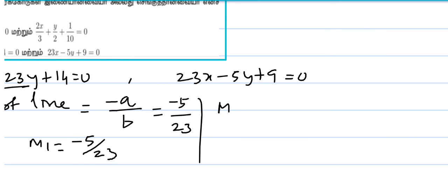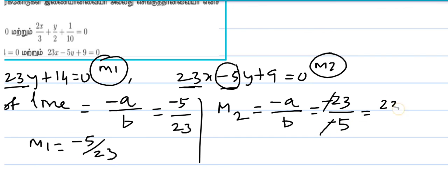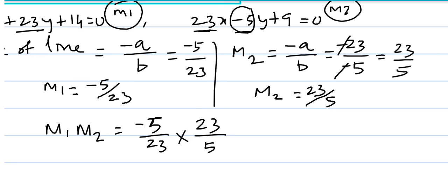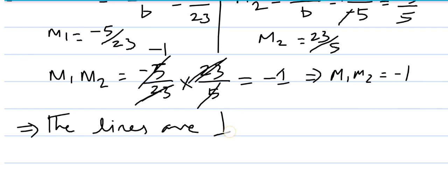The slope m2 is equal to minus coefficient of x by coefficient of y. Here coefficient of x is 23, so minus coefficient of x is minus 23, and coefficient of y is minus 5. So m1 into m2 equals minus 5 by 23 into 23 by 5, which gives minus 1. That means the lines are perpendicular to each other.